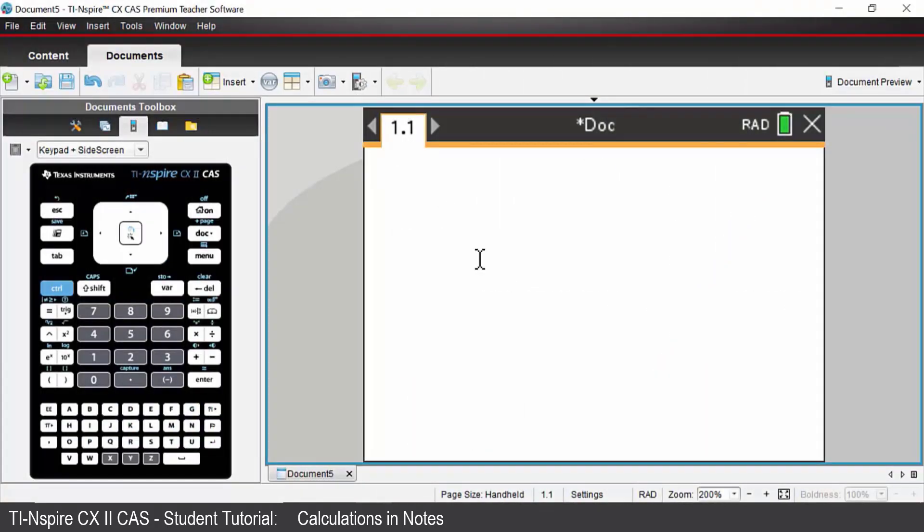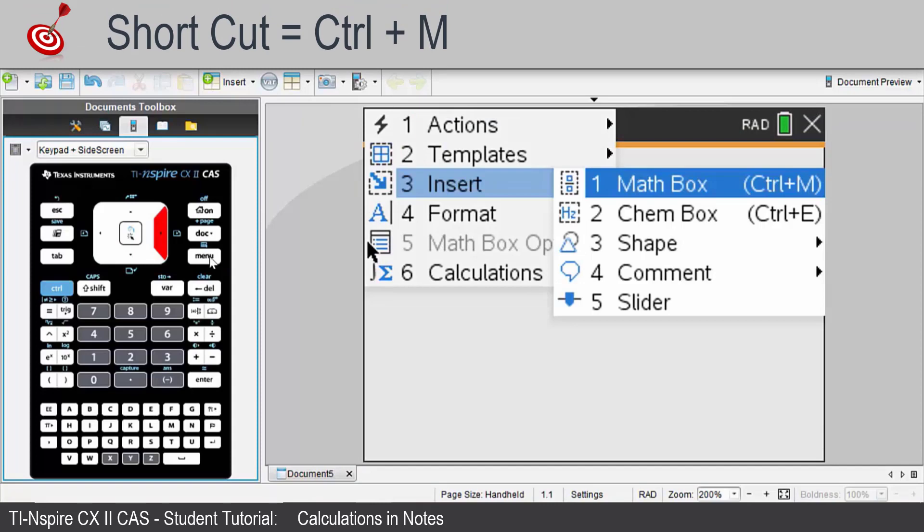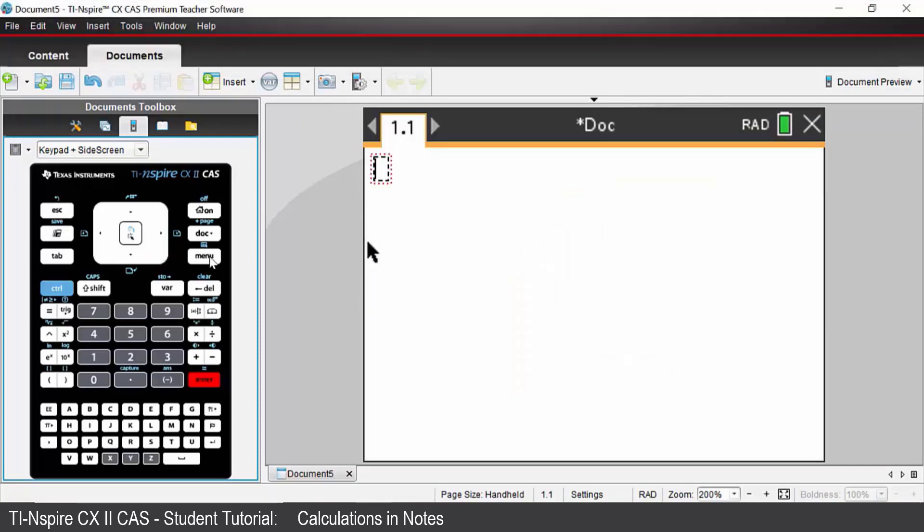On your notes page let's insert a math box. To do that it's menu, come down to insert, we're going to insert a math box option 1 and we're going to define our function f evaluated at x. To define your function you can press ctrl and then the define key which is above the math template or you could type in colon equals and we're going to define our function to be x squared, our parabola.